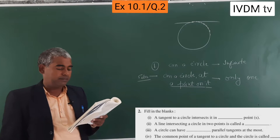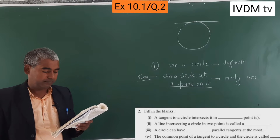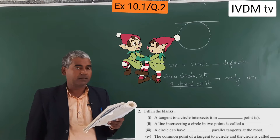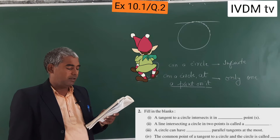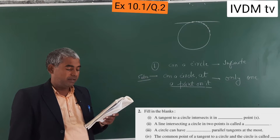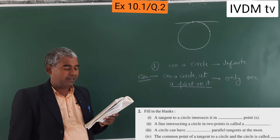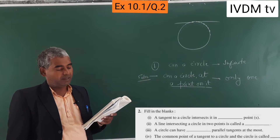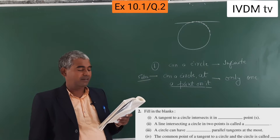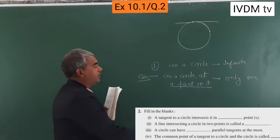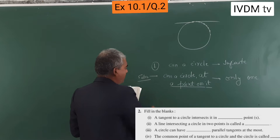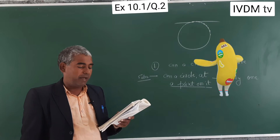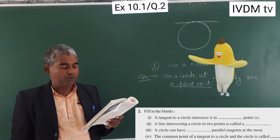Filling the blanks, question number 2, third part. A circle can have parallel tangents at the most.